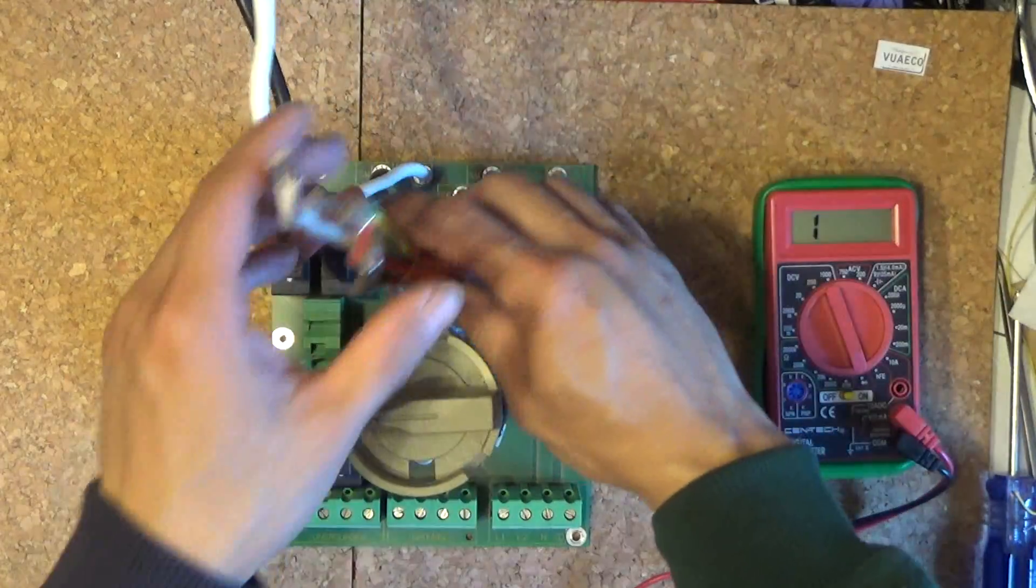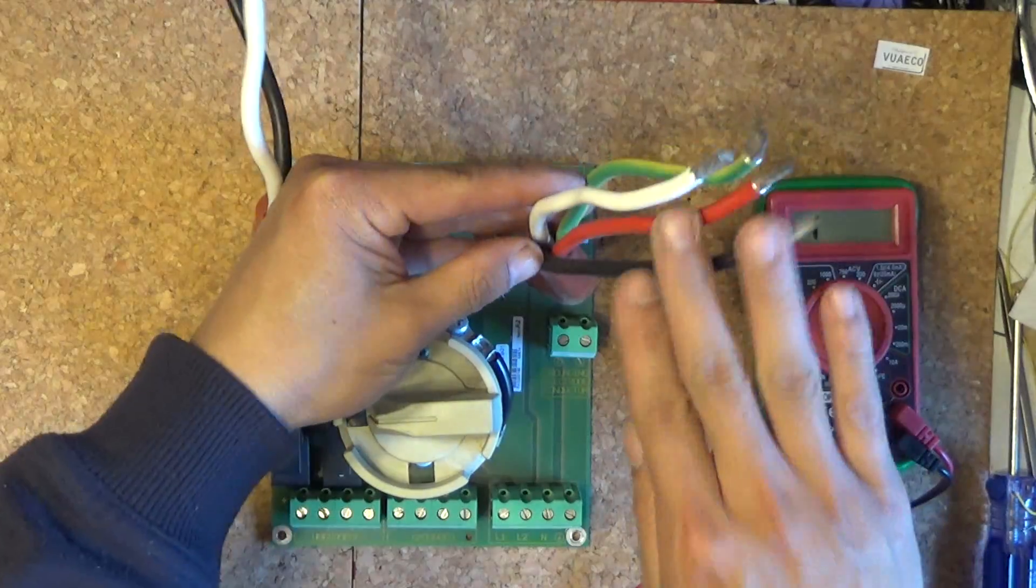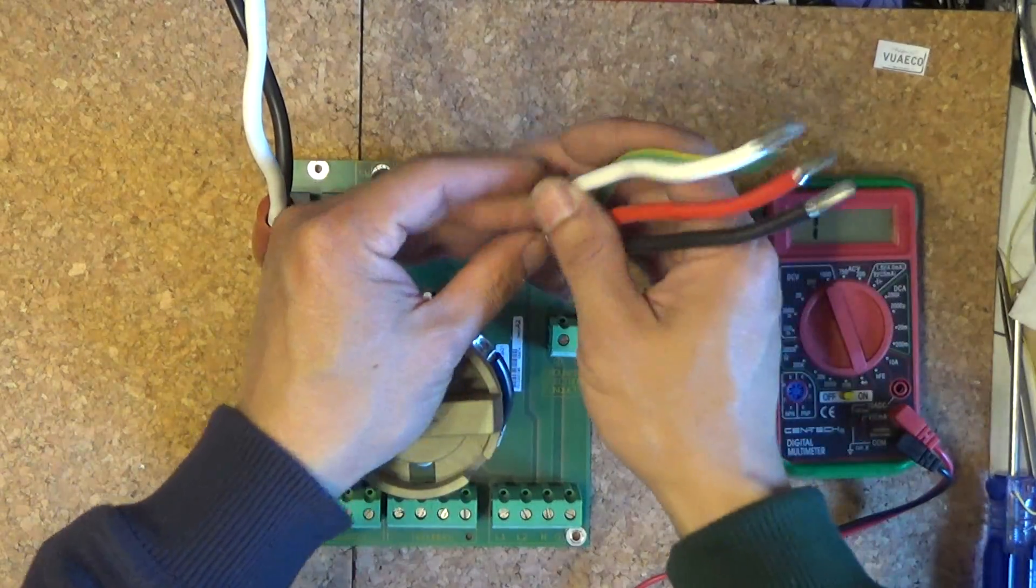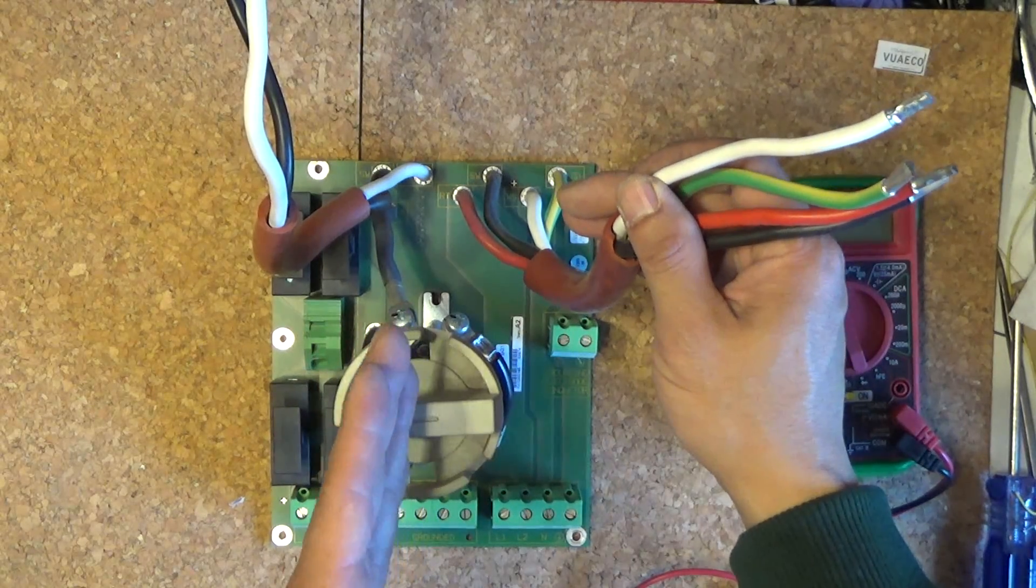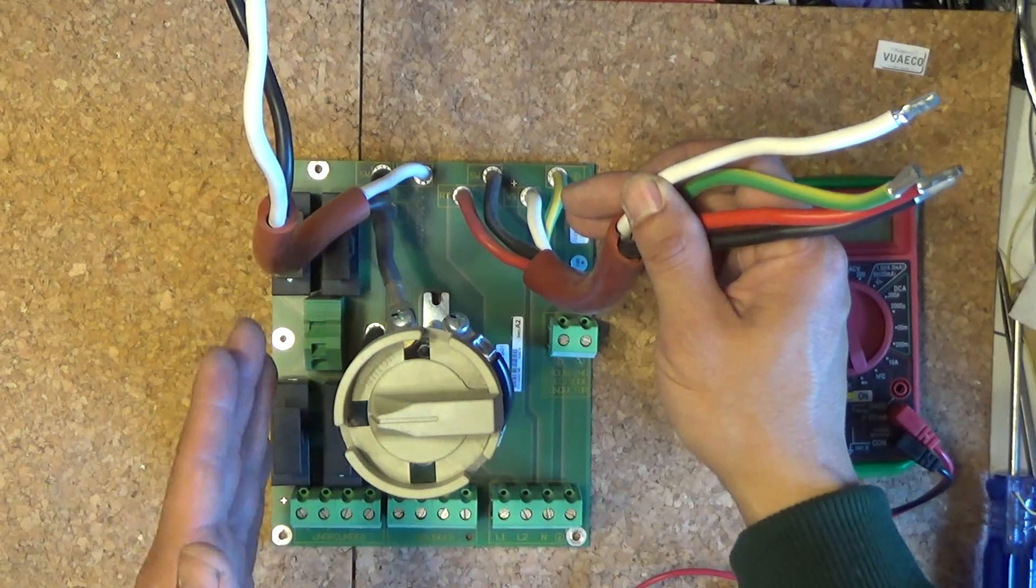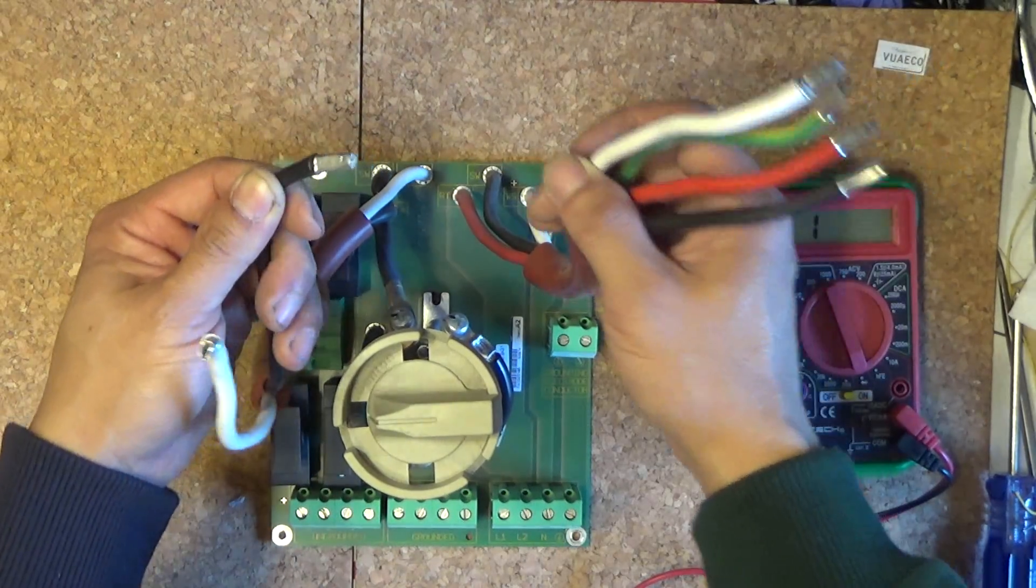So in this switch, all the AC line on the right side here, they are all connected together, not connected to the switch. The switch only turns on and off the DC line. And that is the black wire right here.